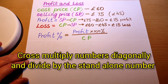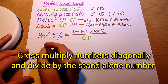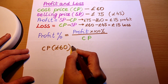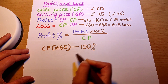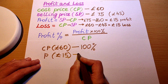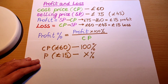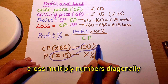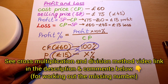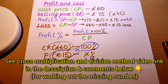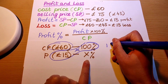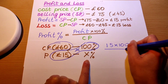Let me show you how to apply the cross multiplication and division method to work out a missing number. Our cost price was 60 pounds — this is our 100 percent. Our profit was 15 pounds. This is the percentage we are looking for — the profit percentage. We cross multiply the numbers diagonally and then divide by whatever is left. So we have 15 times 100 divided by 60.